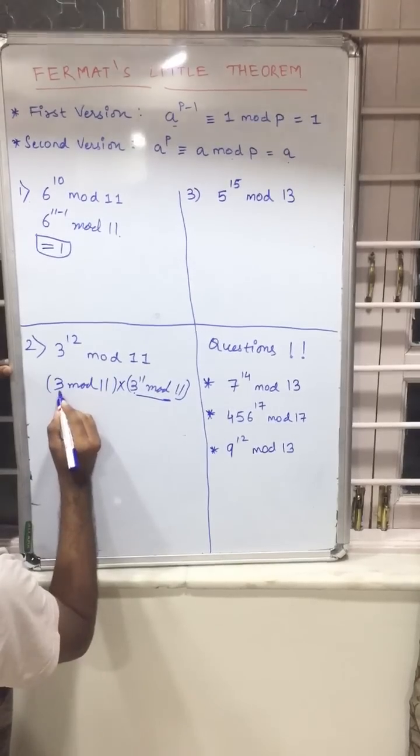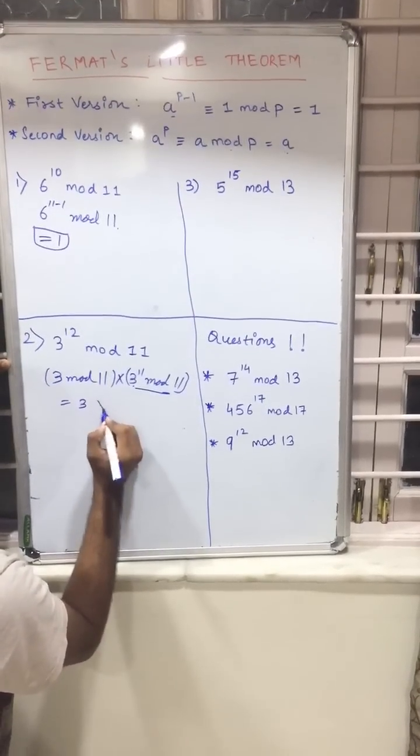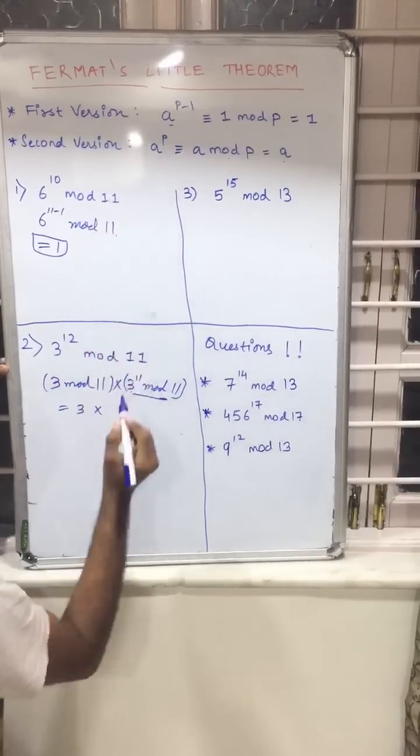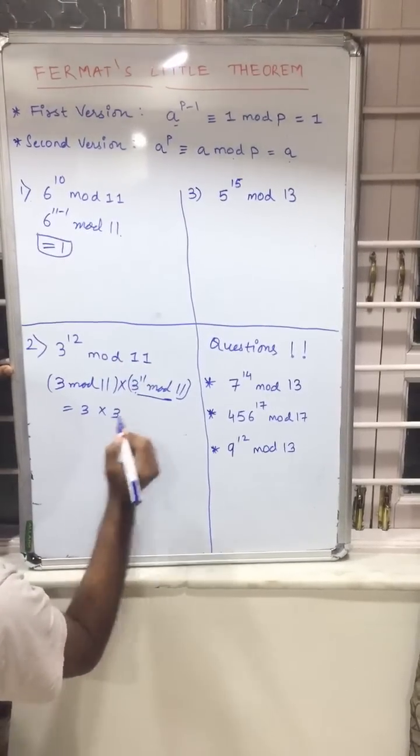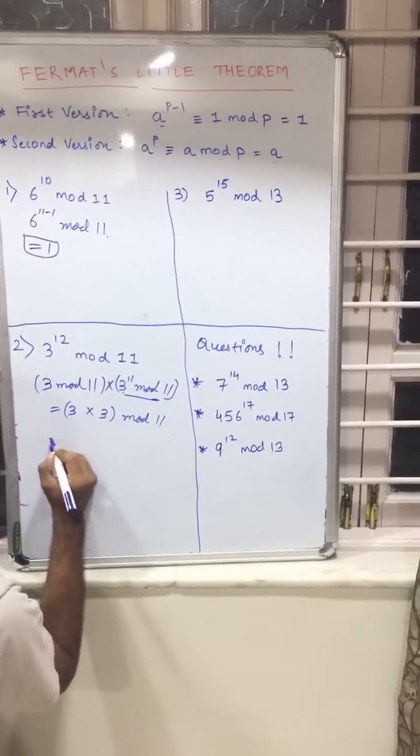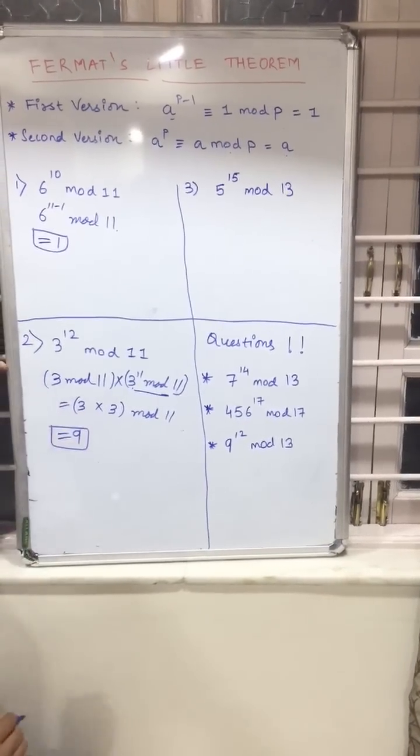So now we can write it that 3 mod 11 is equal to 3, and 3 raised to 11 mod 11, according to our second version, is also equal to 3 mod 11. So our answer will be 9.